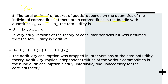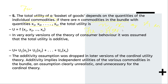If there are n commodities in the bundle with quantities x1, x2, x3, up to xn, the total utility U is a function of x1, x2, x3, up to xn. That is, the total utility of that basket of goods is a function of the quantity of the first good, the quantity of the second good, the quantity of the third good, up to the quantity of the nth good.